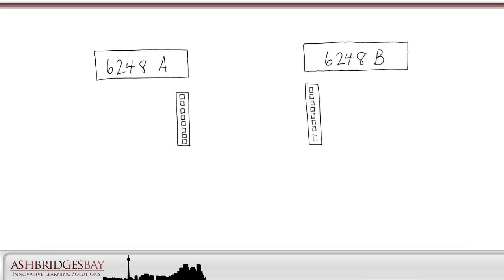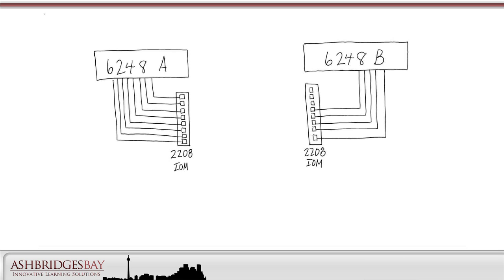There are significant improvements with UCS 2.0. We'll deploy two 6248 fabric interconnects and two 2208 IOMs. This lets us deploy eight 10GB server links on each side, for a total of 160GB active-active. These links can be port channeled in two, four or eight link configurations.